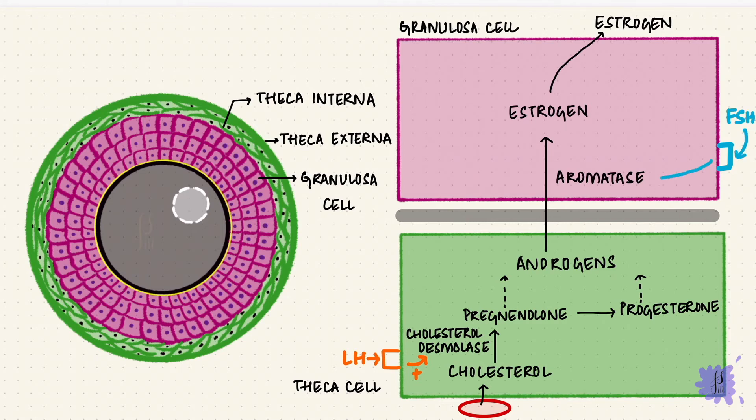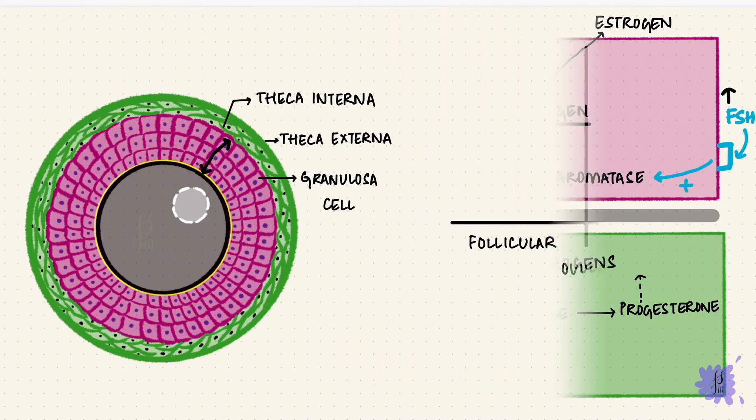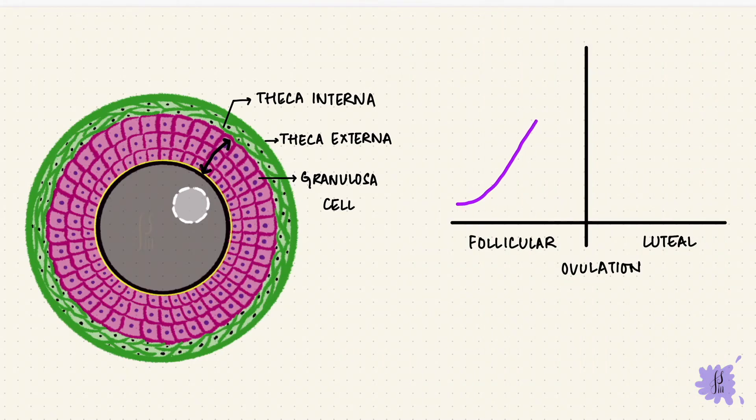And remember, the granulosa cells have FSH receptors. As the follicle is growing, the number of granulosa cells increases. So that means there's more FSH receptors, meaning there's going to be more estrogen. That is why the estrogen levels rise during the follicular phase of the cycle. And remember the effect that estrogen has on FSH and LH, negative feedback. So these levels are low.